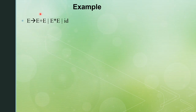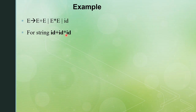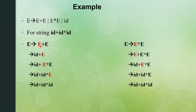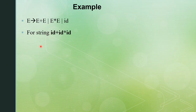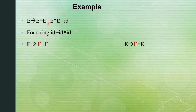This grammar is a typical example of an ambiguous grammar. The grammar is: E gives E plus E, E star E, or id — three production options. Let's start with the string id plus id star id. If we want to generate this string, we have two different methods.